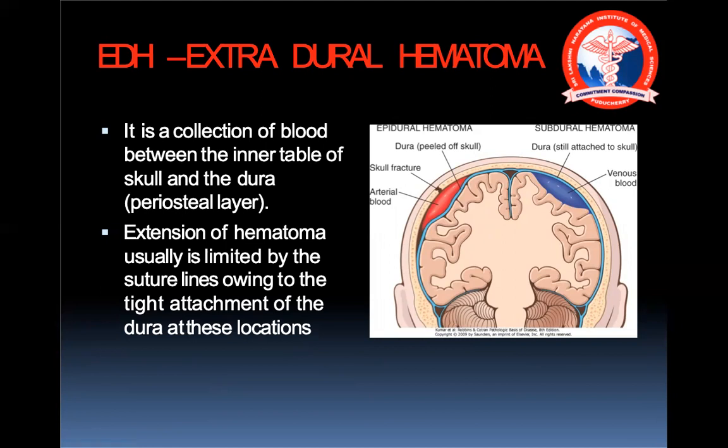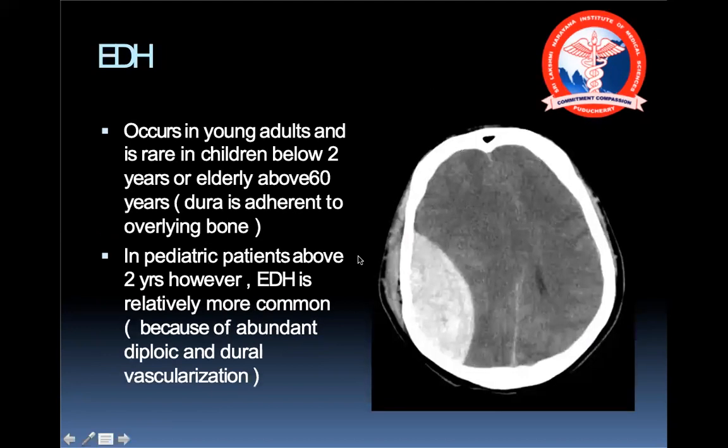EDH is the most important surgical emergency in neurosurgery and all EDHs must be operated. It is a collection of blood between the inner table of the skull and the periosteal layer of dura, with extension of the hematoma usually limited by the suture line due to tight dural attachment at these locations. It occurs in young adults and is rare in children below two years and elderly above 60 years, as the dura is very adherent to the overlying bone.